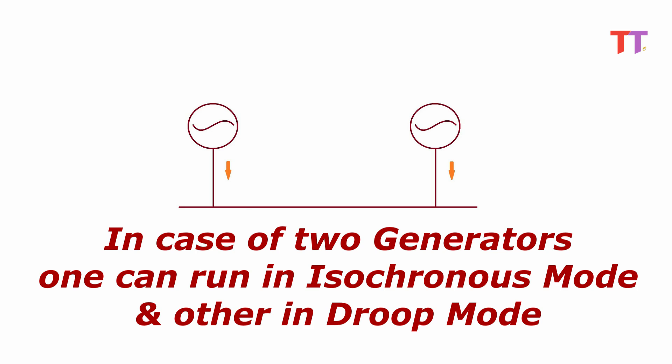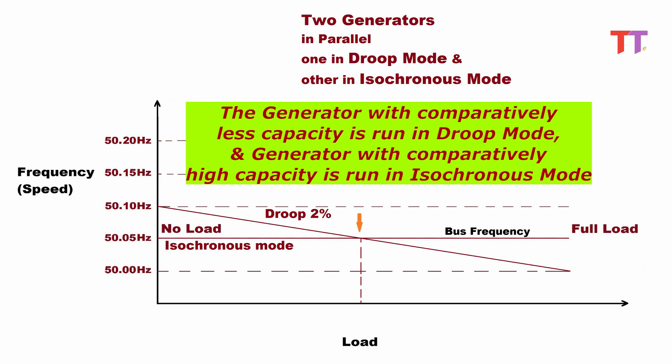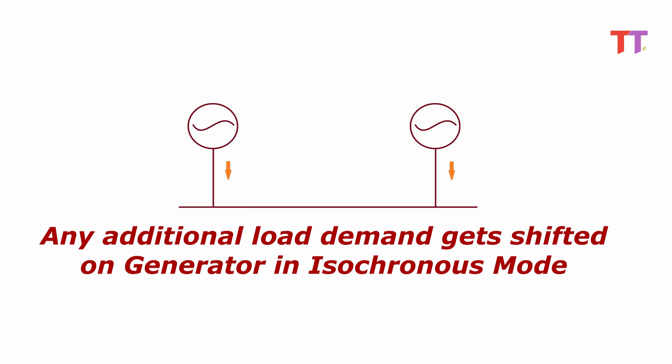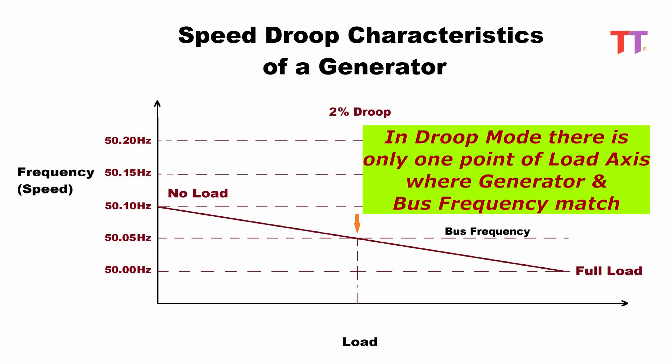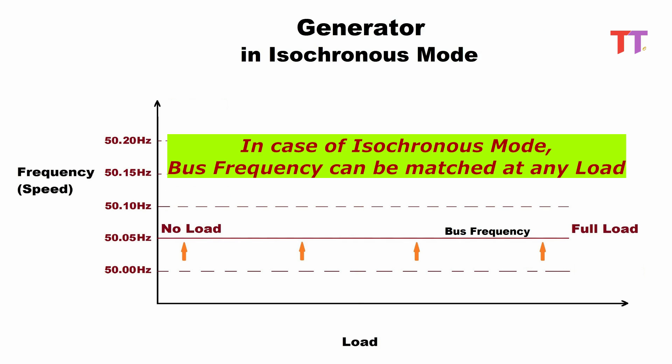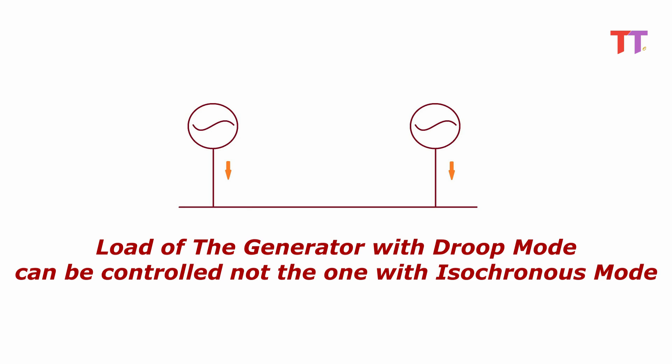In case of two generators, one can run in isochronous mode and the other in droop mode. The generator with comparatively less capacity is run in droop mode, and the generator with comparatively high capacity is run in isochronous mode, because any additional load demand gets shifted onto the generator in isochronous mode. Here in the graph we can see that in droop mode there is only one point on the load axis where generator and bus frequency match, whereas in isochronous mode, bus frequency can be matched at any load. Hence the load of the generator with droop mode can be controlled, not the one with isochronous mode.